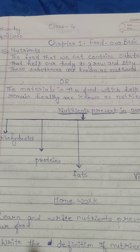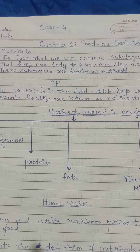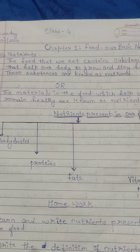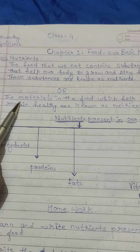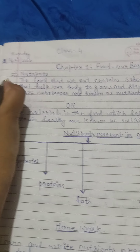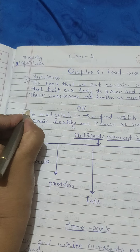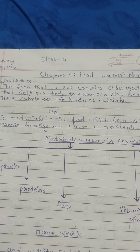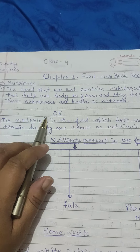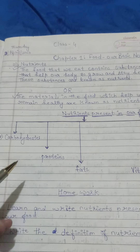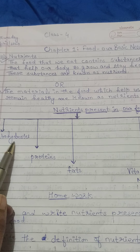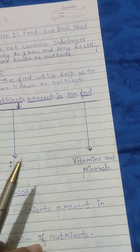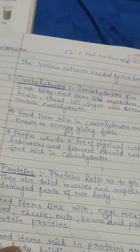Good morning students. This is food, our basic need. In the previous video I explained about nutrients — you have to learn the definition of nutrient, either the first or the second definition, any one from each. We have nutrients present in our food: carbohydrates, proteins, fats, vitamins, and minerals. In this video, we are going to explain in detail about the various types of nutrients present in our food.